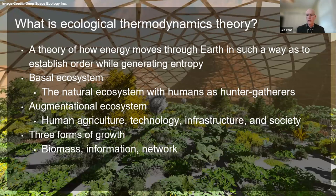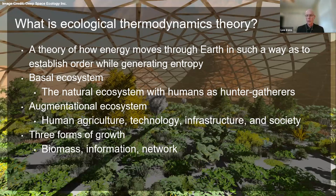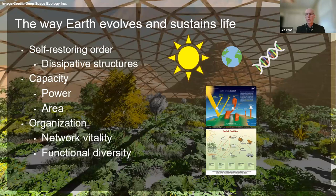Both the basal and augmentational ecosystems have three forms of growth. For the basal ecosystem: growth occurs as an increase in biomass of individuals and populations; an increase in information in the form of DNA length; and growth of networks such as food webs. In the augmentational ecosystem: growth occurs in average human size and population numbers due to mass production of food; growth of information occurs with increases in human knowledge, information technology, manufacturing process knowledge, and automation; and growth of organizational and institutional structures, communication networks, and human supply chain networks.